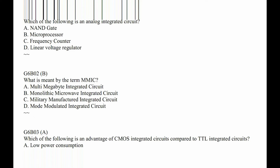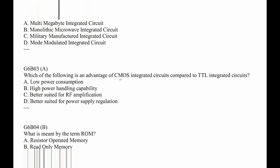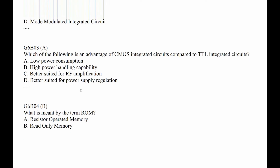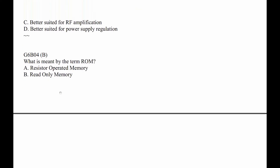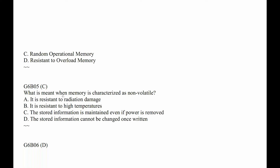G6B02. What is meant by MMIC? That's monolithic microwave integrated circuit. G6B03. Which of the following is an advantage of a CMOS integrated circuit compared to transistor logic? Power consumption — they don't use much current. So it's low power consumption. G6B04. What is meant by ROM? That's read only memory from a computer. G6B05. What is meant when memory is characterized as non-volatile? It doesn't go away — the stored information is maintained even if power is removed.